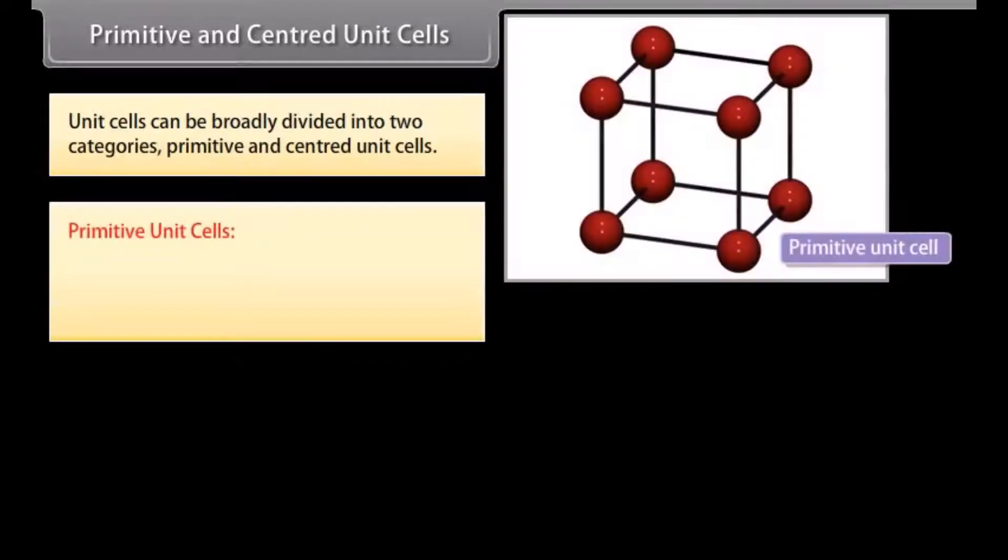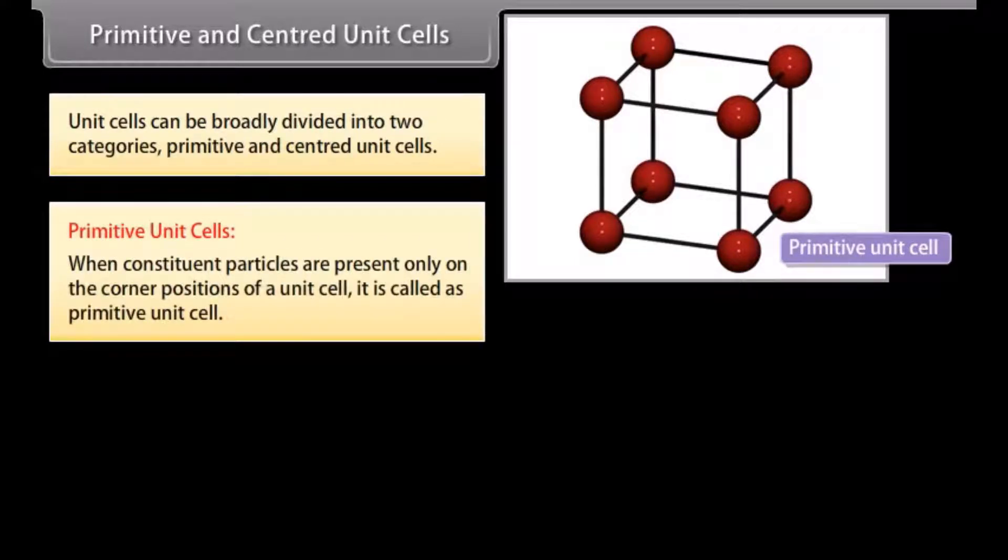Primitive and centered unit cells. Unit cells can be broadly divided into two categories: primitive and centered unit cells. A. Primitive unit cells: when constituent particles are present only on the corner positions of a unit cell, it is called as primitive unit cells.